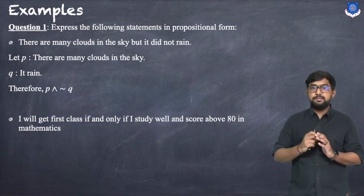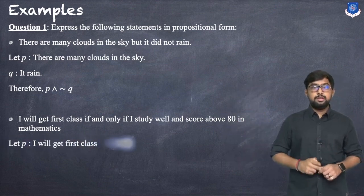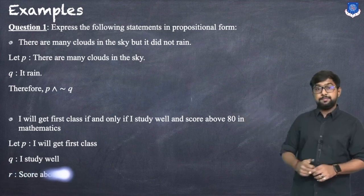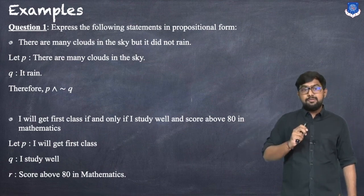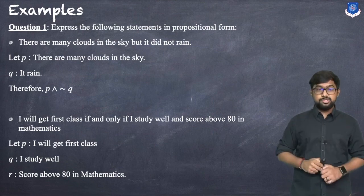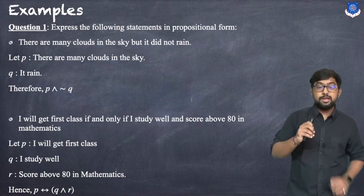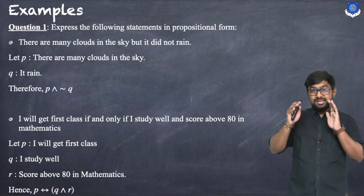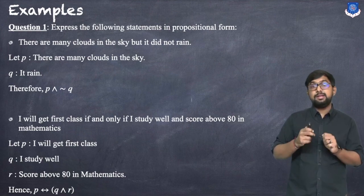Second statement: 'I will get first class if and only if I study well and score above 80 in mathematics.' We divide into three parts: P = 'I will get first class,' Q = 'I study well,' R = 'I score above 80 in mathematics.' The propositional form is P ↔ (Q ∧ R).